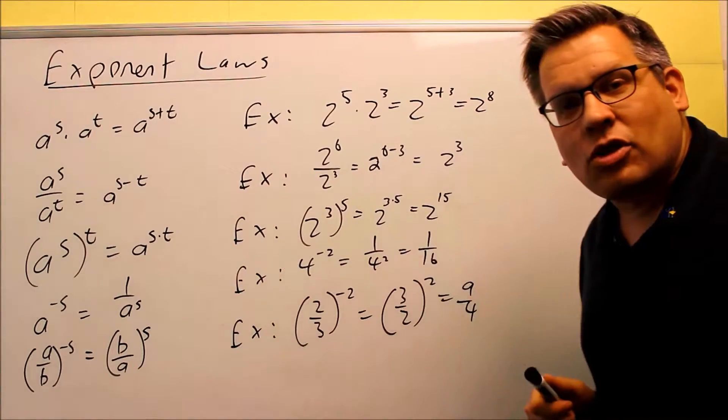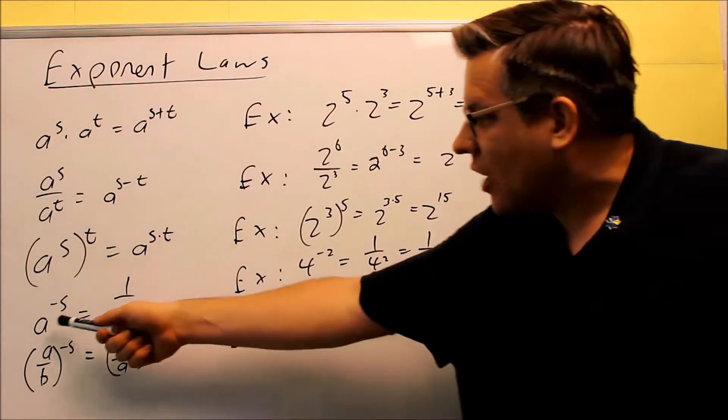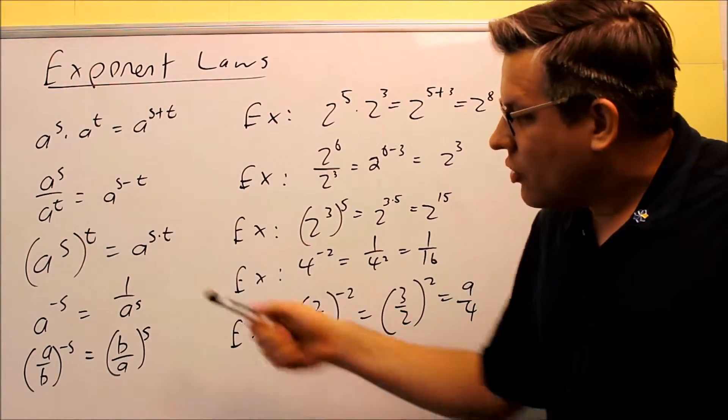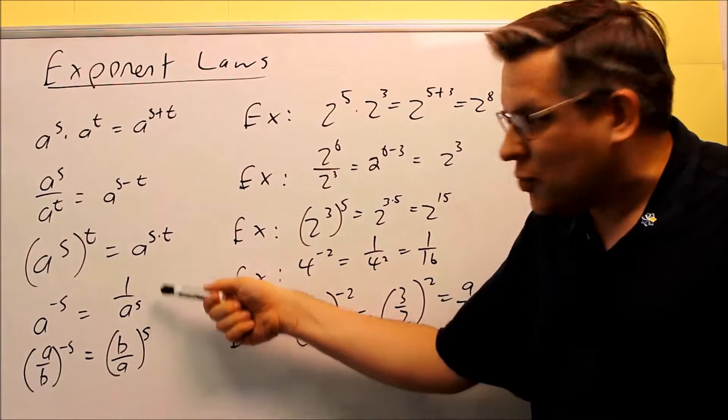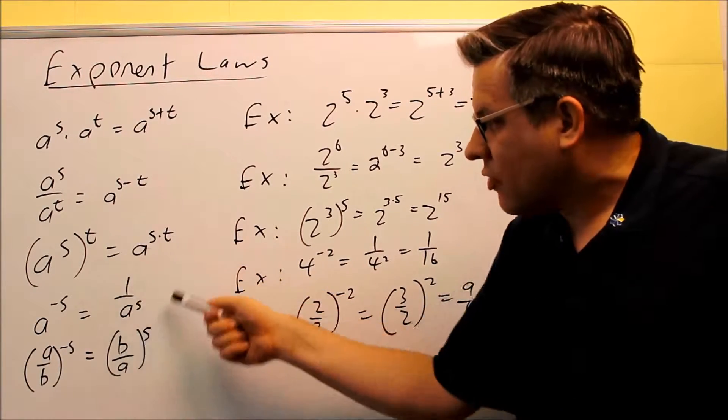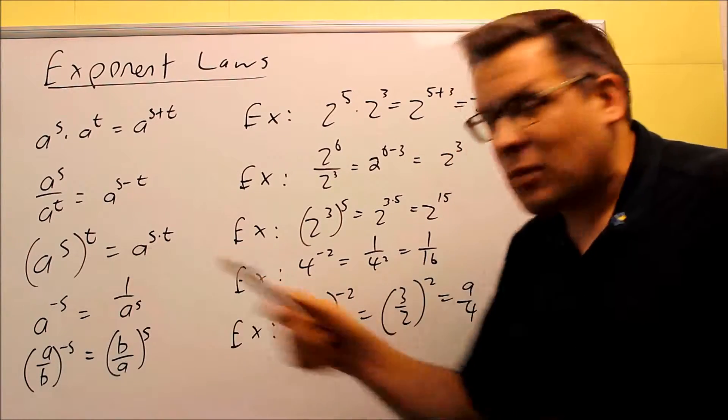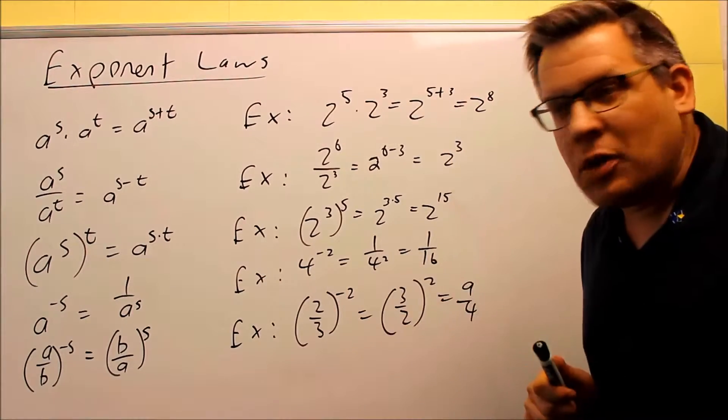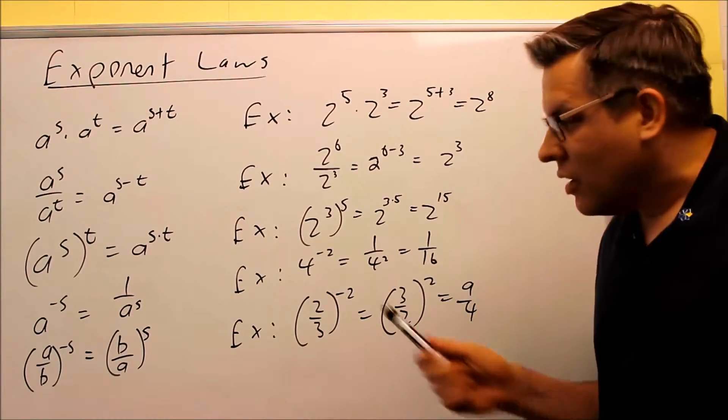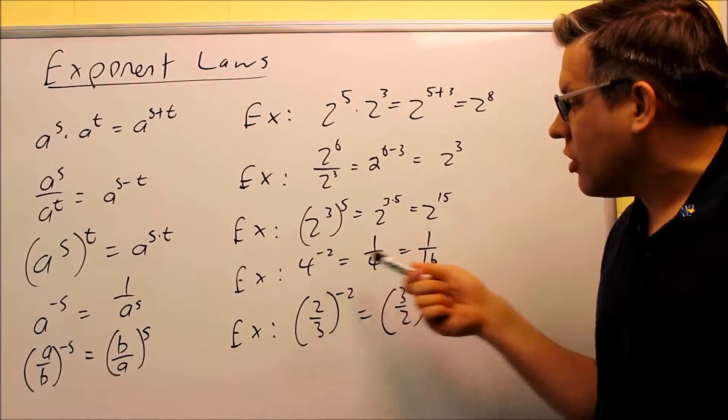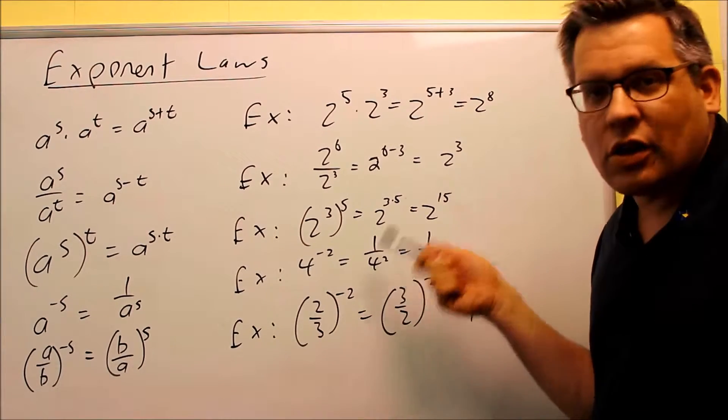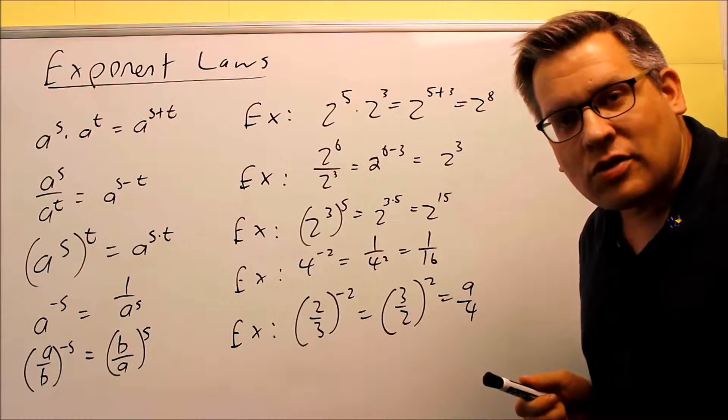The ones down here have to deal with negative exponents. So I have a to the negative s. You can make that as a positive exponent by putting that on the bottom, or likewise, if you have something in this form, you can always take it back to a negative exponent. You may need to do that operation as well. So 4 to negative 2, you can make that 1 over 4 squared, and then 4 squared you can do and you can get 16 as your answer.